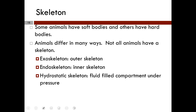Here we are at the skeleton. Some animals have soft bodies and others have hard bodies. Not all animals have a skeleton. We see the exoskeleton — the outer skeleton — and then the endoskeleton, the inner skeleton. Finally, we have the hydrostatic skeleton: that fluid-filled compartment that is under pressure.